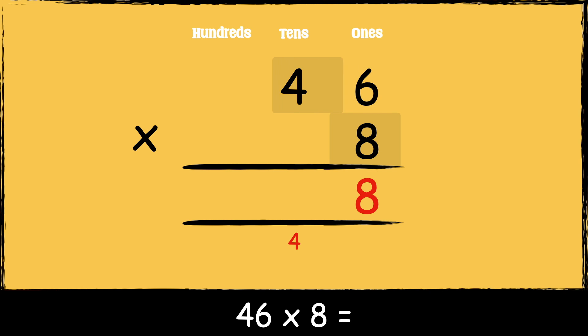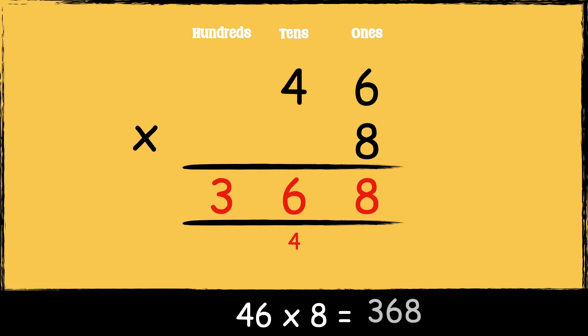Next we need to multiply eight by four tens: eight times four is thirty-two. We add the four tens below, so thirty-two add four is thirty-six. So the answer is three hundred and sixty-eight.